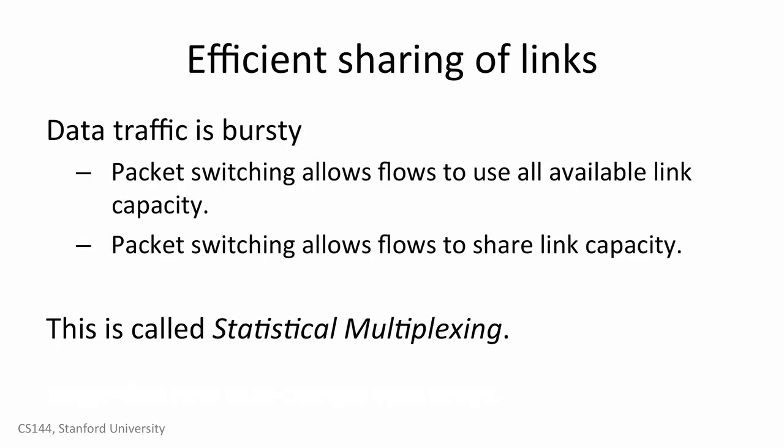Think about how you typically use the internet — your use is bursty. You load a webpage, then read it, then load another one. You download a few songs from iTunes, then listen to them. You stream a show from Netflix for 45 minutes, then stop. Data traffic is bursty: rather than always sending and receiving data at a fixed rate, usage jumps and drops over time. While there are large-scale peaks — 3pm and 8pm are typically high, while 2 in the morning is low — on a smaller scale it is very bursty, and these bursts are often independent.